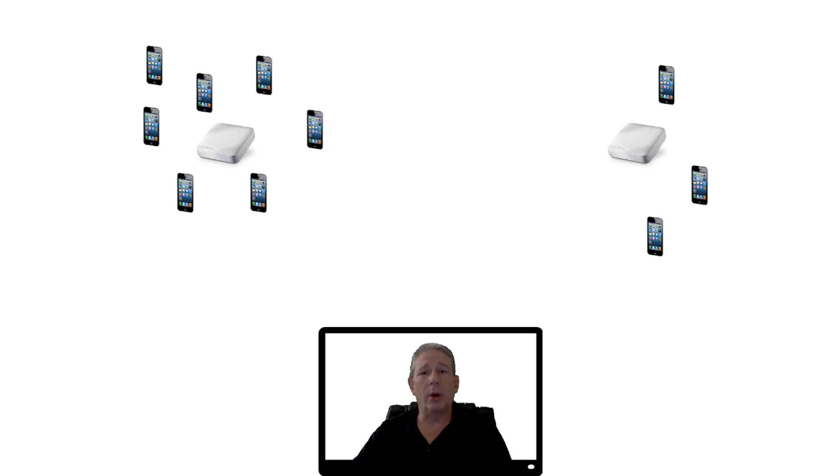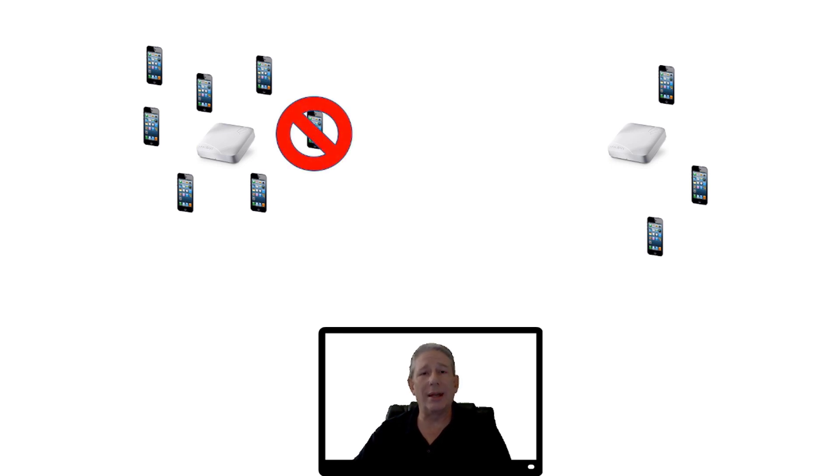With load balancing enabled, for the scenario we see here, we have one AP that has more stations connected than another. A new client device comes into the area and wants to connect. For whatever reason, its chipset has decided to connect to the busier access point. So it tries to authenticate and associate with the busier access point. With load balancing enabled, that AP is going to ignore those connection attempts, and that station will not be able to connect to the busier of these two access points.